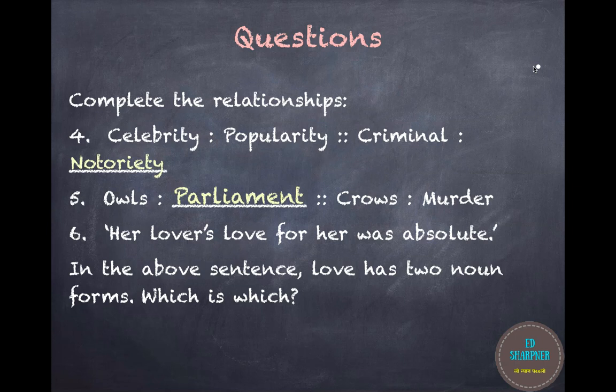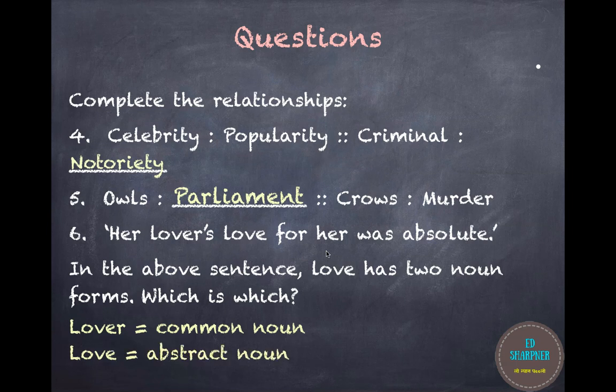Coming to the next question: 'Her lover's love for her was absolute.' In the above sentence, the word love has two noun forms. Pause the video for a moment and think. The lover is a common noun, and the other noun love is an abstract noun — it cannot be seen.